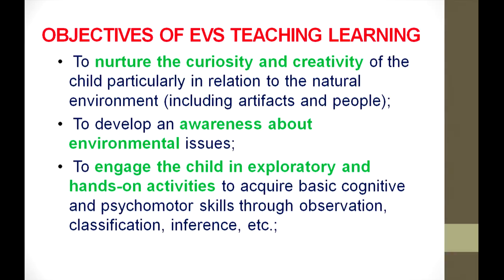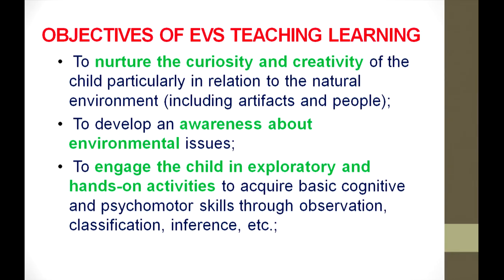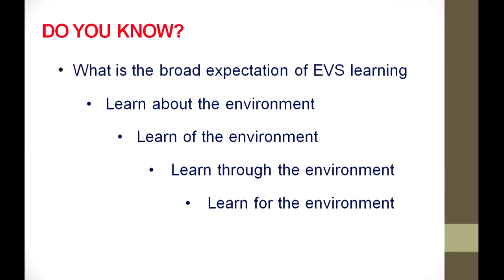The major expectation of EVS learning relates to all aspects of child learning: learning about the environment, learning through the environment, learning of the environment, and finally learning for the environment. The last objective is to engage the child in exploratory and hands-on activities to acquire basic cognitive and psychomotor skills through observation, classification, and many more age-appropriate skills. The broader expectation of EVS learning is fourfold.